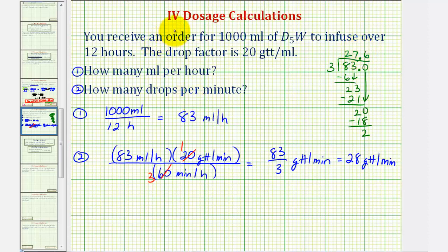So the flow rate would be 83 milliliters per hour, and the drop rate would be 28 drops per minute. I hope you found this helpful.